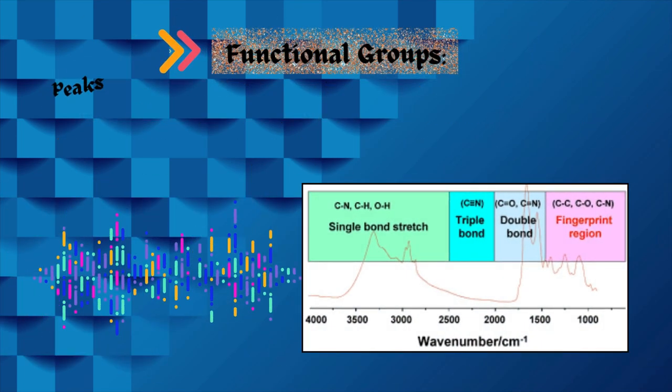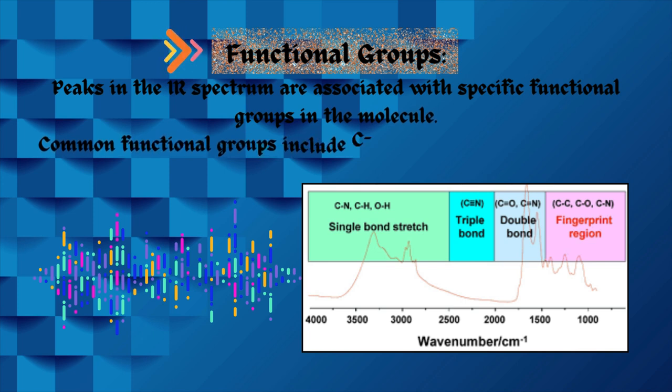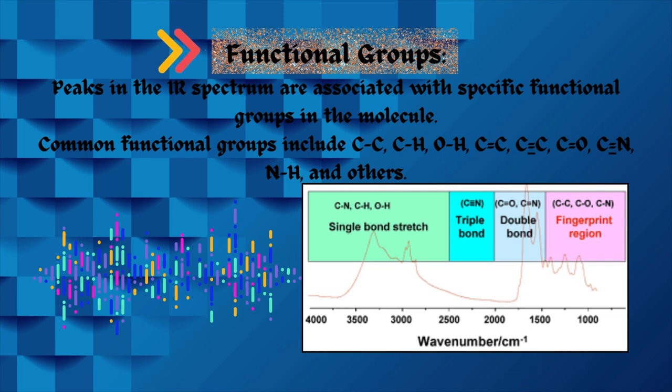Functional groups. Peaks in the IR spectrum are associated with specific functional groups in the molecule. Common functional groups include CC, CH, OH, CC double bond, CC triple bond, CO double bond carbonyl group, CN triple bond, NH bond, and others.